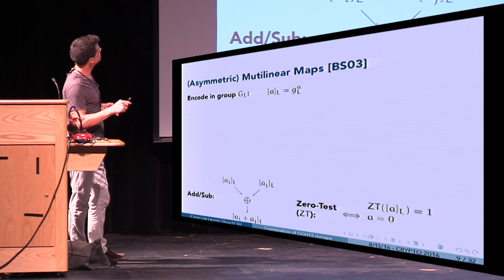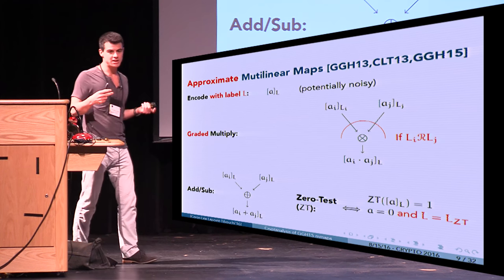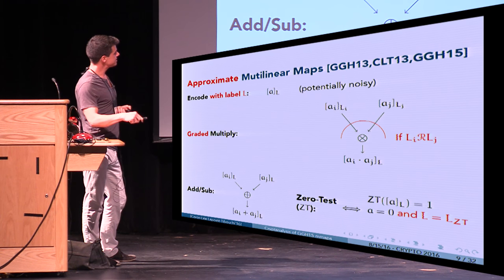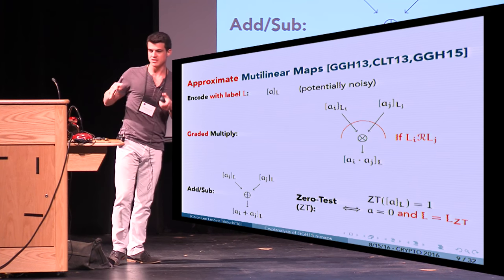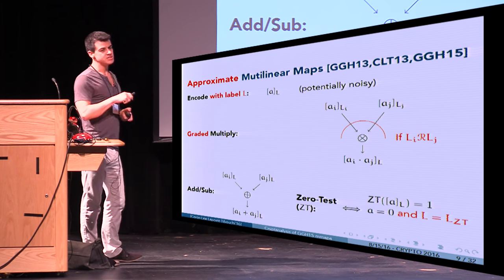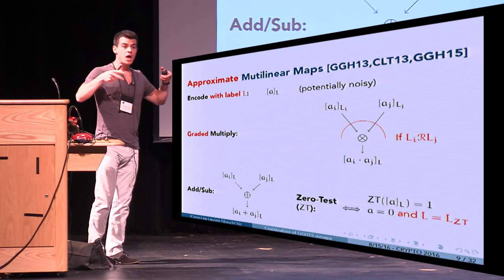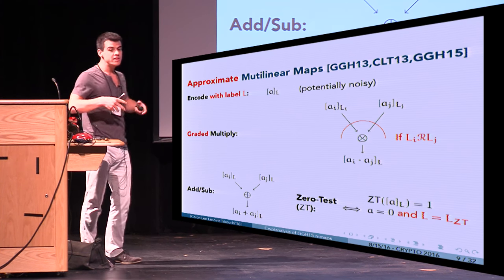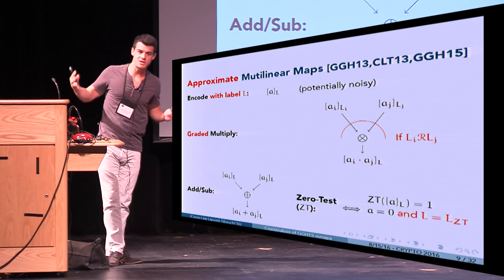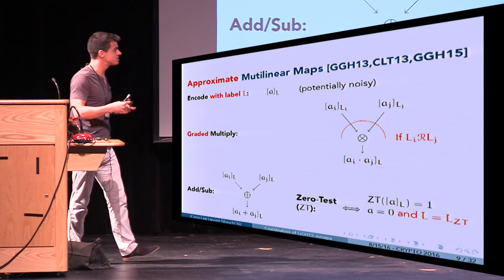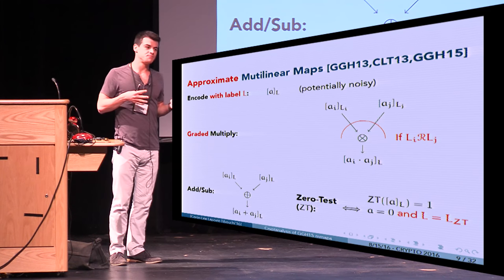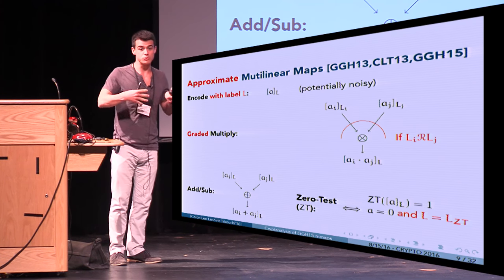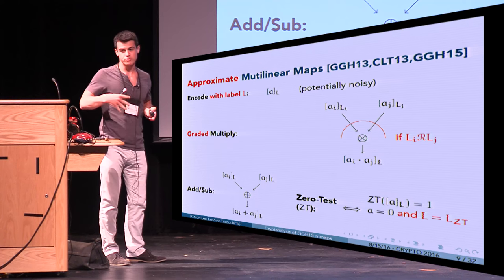For approximate multilinear maps it's nearly the same, except instead of being in a group G_l, you encode with respect to a label l. You can still add for the same label, zero-test only for a specific label, and multiply two encodings for labels i and j if they satisfy a certain relation. This relation is what differs between candidates — for the GGH15 candidate, these relations are given by a graph structure.